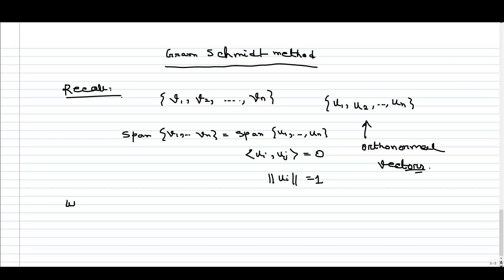For the first vector, we consider w1 — the new vector — and the first vector is the same. So we consider w1 to be our v1. Now we have to make it orthonormal, so our u1 should be w1 divided by the norm of w1. So we basically normalize this vector, and the norm of u1 is 1.